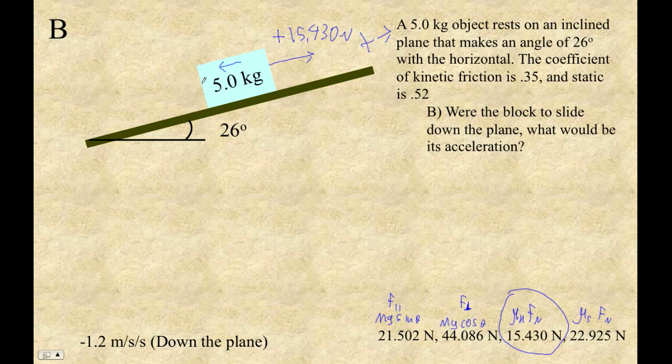The parallel force always acts down the plane, so there it is. So we've got 21.502 newtons, and that guy is going to be down the plane, because down the plane is negative.